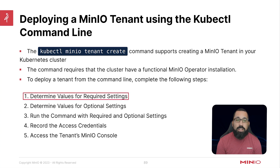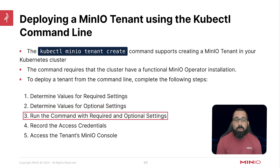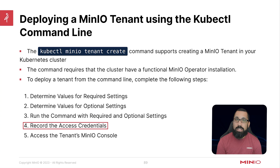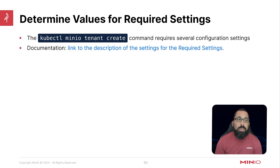The steps are: one, determine values for the required settings; two, determine values for the optional settings; three, run the command with the required and optional settings included; four, record the access credentials — we'll talk about that in both the slides and the lab; and lastly, access the tenant MinIO console. The kubectl minio tenant create command requires several configuration settings.